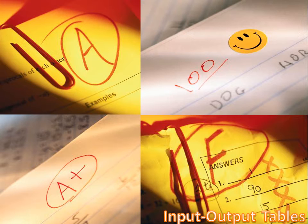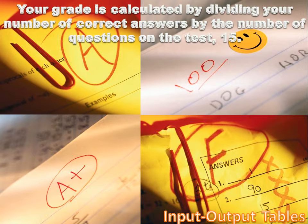Today, we're going to be talking about input-output tables, and this is pretty simple. You'll have no trouble with this. I thought I'd start with an example. Let's start with an example about grades. If you take a test, the teacher calculates your grade by dividing the number of questions you got right by the total number of questions on the test. Your grade equals the number of questions you got right divided by the number of questions on the test, which in this case is 15.